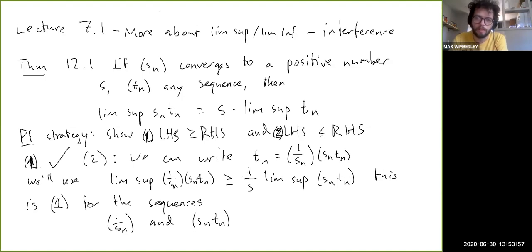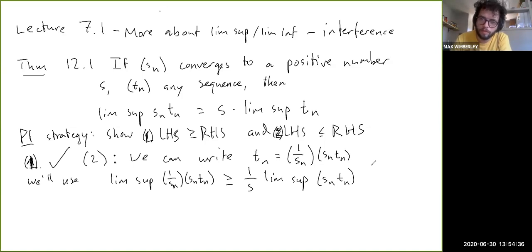Because the limit of S_n is positive, then one over S exists. And that also means S_n itself has to be positive for all values of n after a certain point. By ignoring the first part of the sequence S_n, we can assume that all of these numbers are well defined because ignoring the first part of the sequence doesn't affect what the lim sup is. This is true by one. This inequality we know is true because we already proved it for arbitrary pairs of sequences.